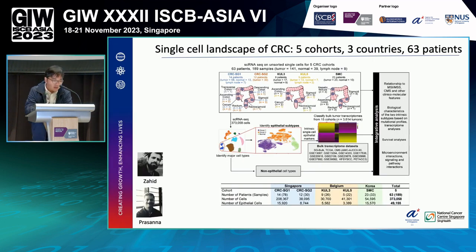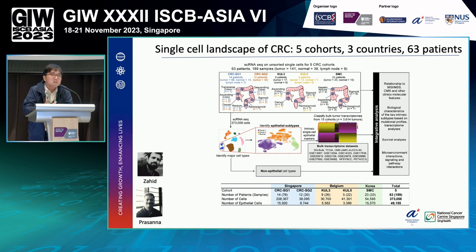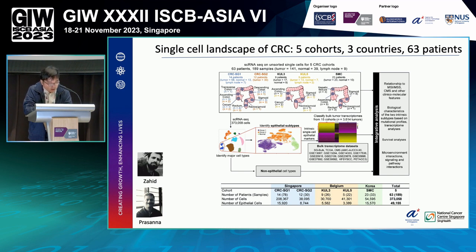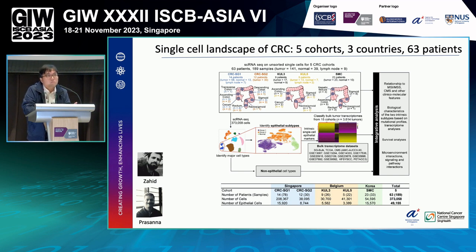In our study, we collected data from five different cohorts from three countries: Singapore, Belgium, and Korea. We sequenced 189 samples from 63 patients. After several rounds of stringent quality control, we ended up with 373,000 high-quality cells, of which we focused on 49,000 epithelial cells — the cell type of interest. We then validated our findings using a larger bulk transcriptomic cohort of 3,614 patients from 15 different cohorts, followed by an integrative analysis.